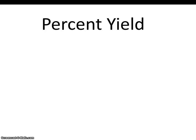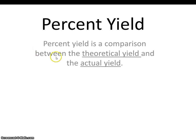A percent yield problem should be completed exactly like a regular stoichiometry problem, except you'll do one additional step at the end. Percent yield is a comparison between the theoretical yield and the actual yield. The theoretical yield is how much product you could make in theory, and the actual yield is how much product you actually made. The theoretical yield will always be larger than the actual yield.